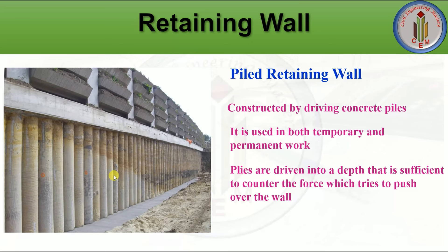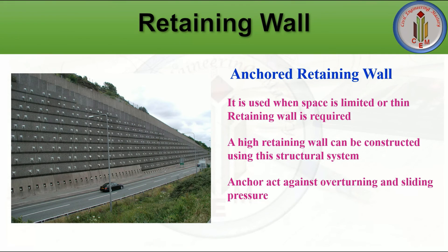Pile retaining walls are constructed by driving reinforced concrete piles adjacent to each other. These piles can be used in both temporary and permanent work, and are driven to a depth sufficient to counter the forces trying to overturn the wall. Pile retaining walls offer high stiffness and can hold lateral earth pressure in large excavations without disturbing surrounding structures. They are economical for heights of six to seven meters.